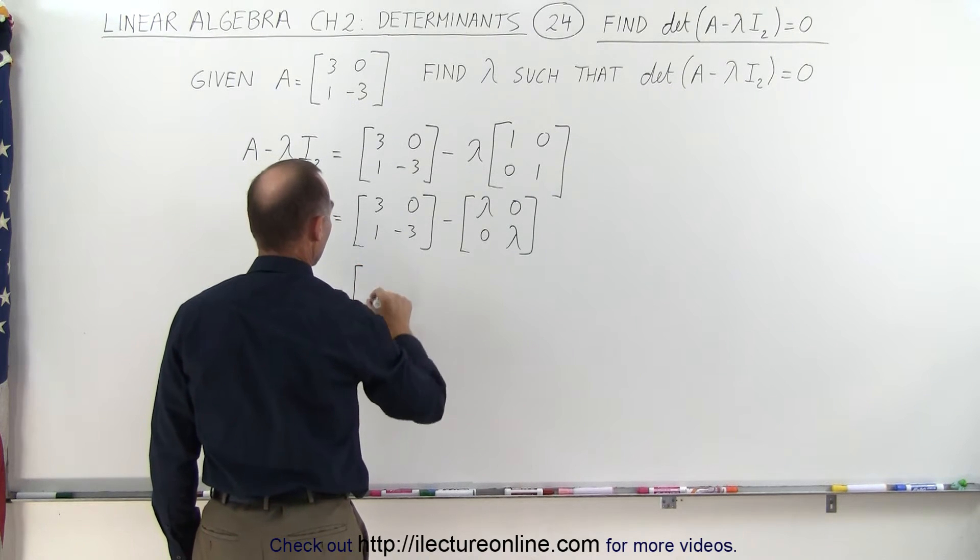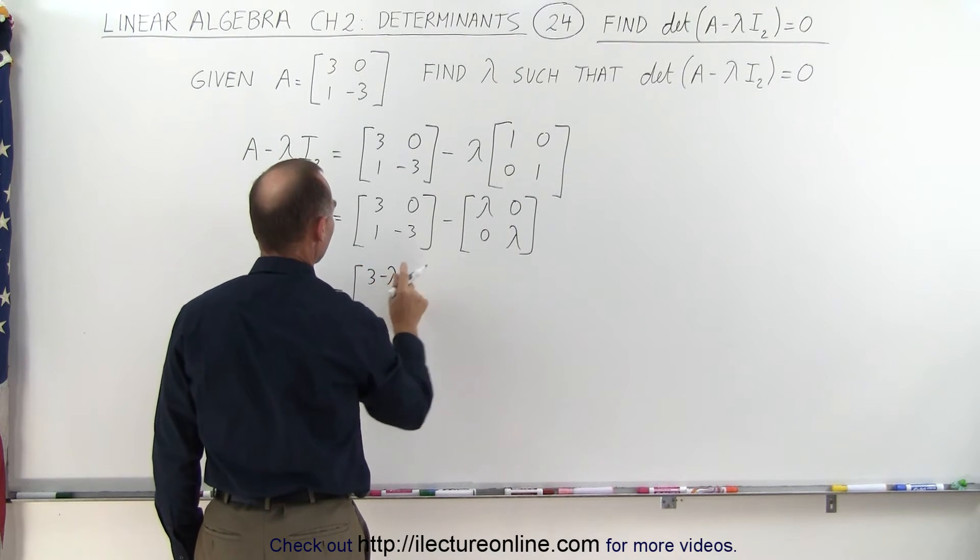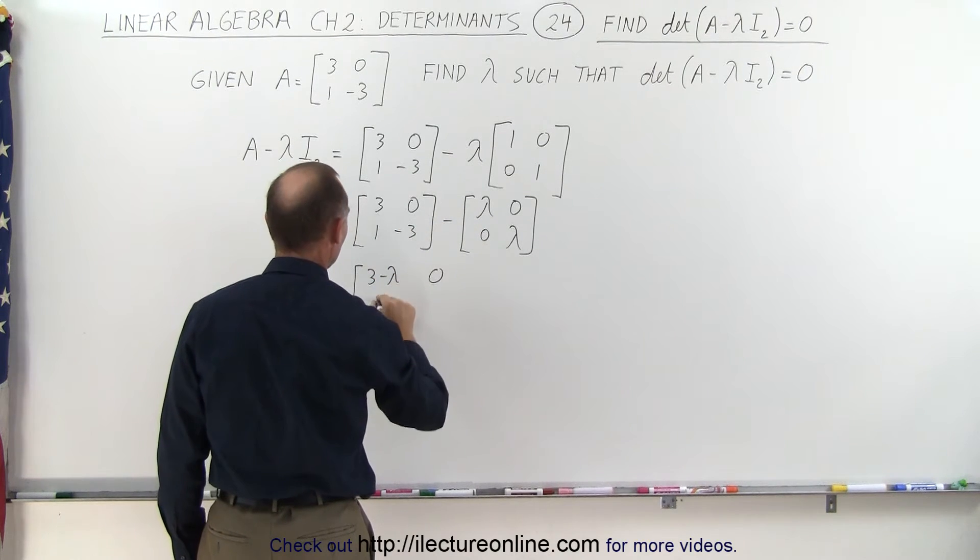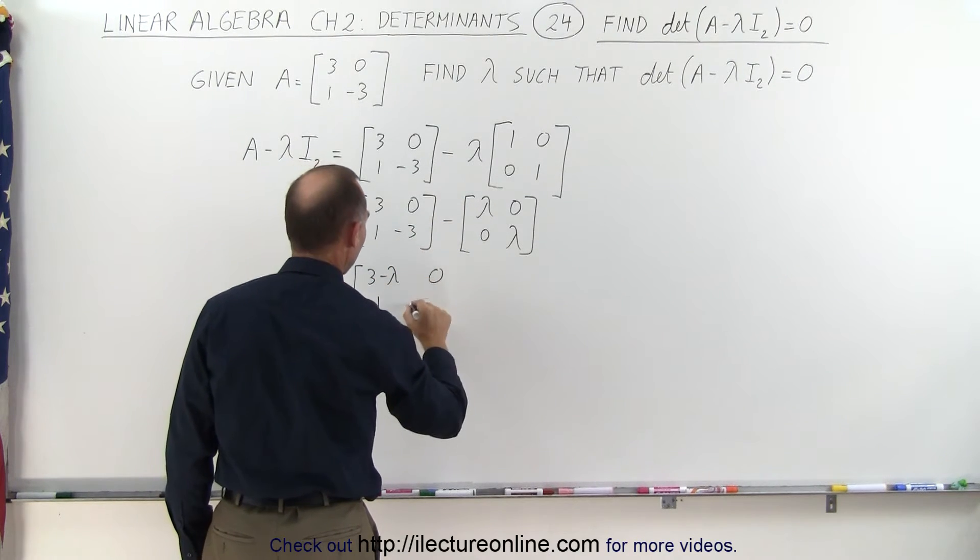This gives us three minus lambda for the first element, zero minus zero, one minus zero, and minus three minus lambda.